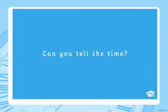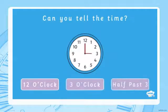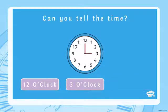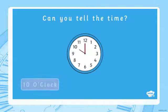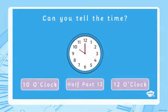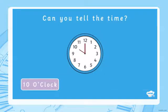Can you tell the time? Is it 12 o'clock, 3 o'clock, or is it half past 3? It's 3 o'clock. What time is it now? Is it 10 o'clock, half past 12, or is it 12 o'clock? Hint — look at where the minute hand is pointing. It's 10 o'clock.